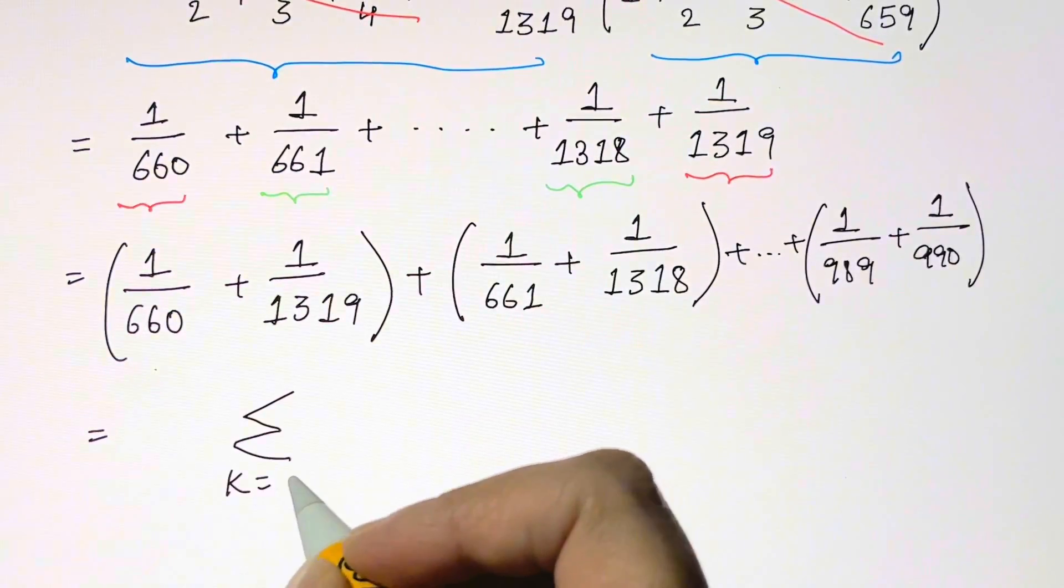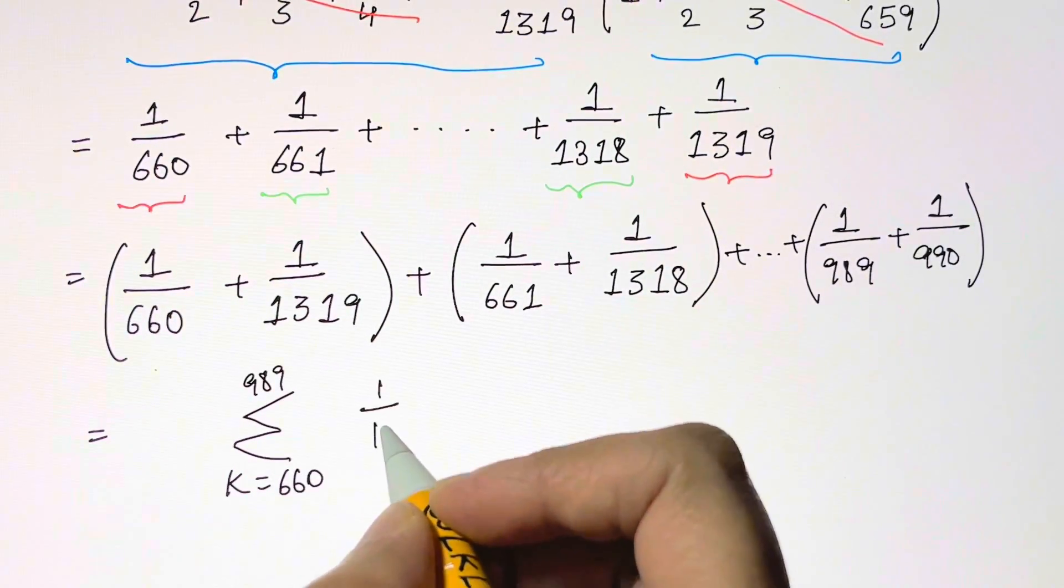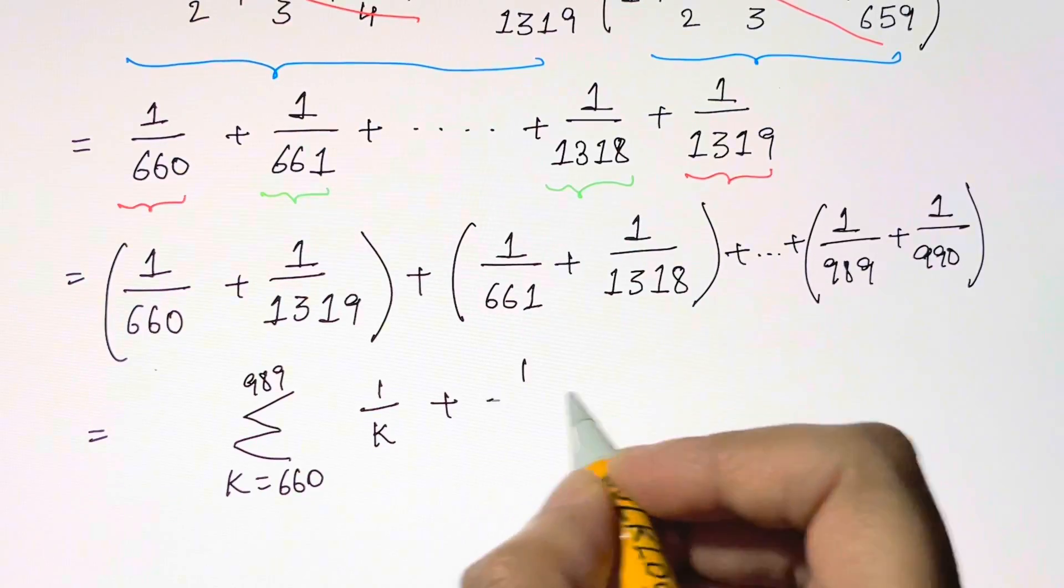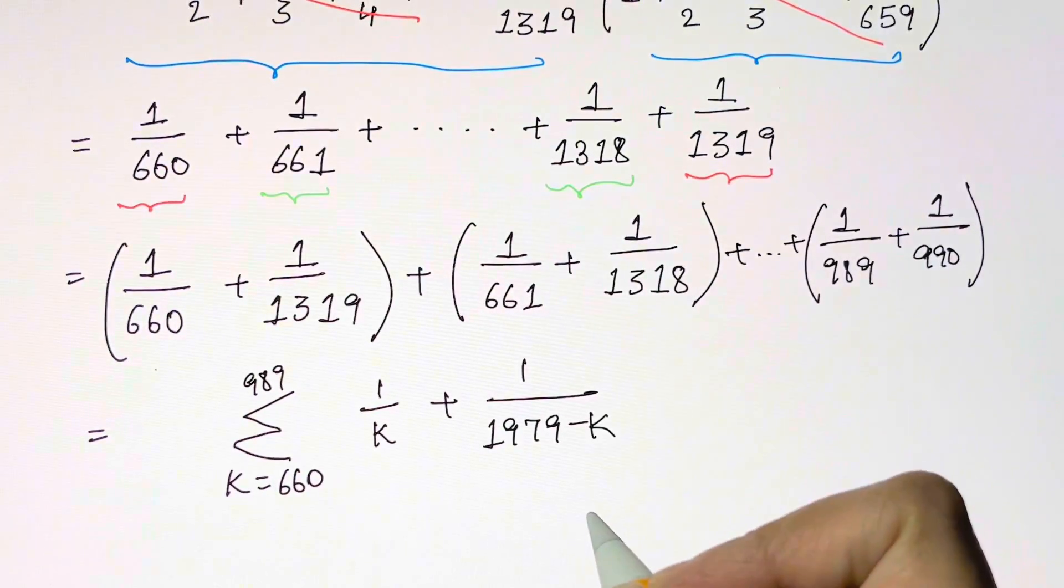That's a summation from k equals 660 to 989 of the form 1 over k plus the second fraction within the pair is 1 over 1979 minus k.